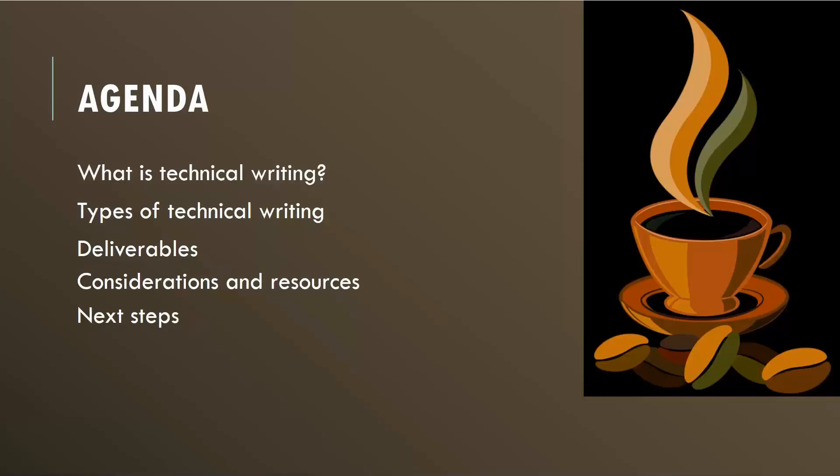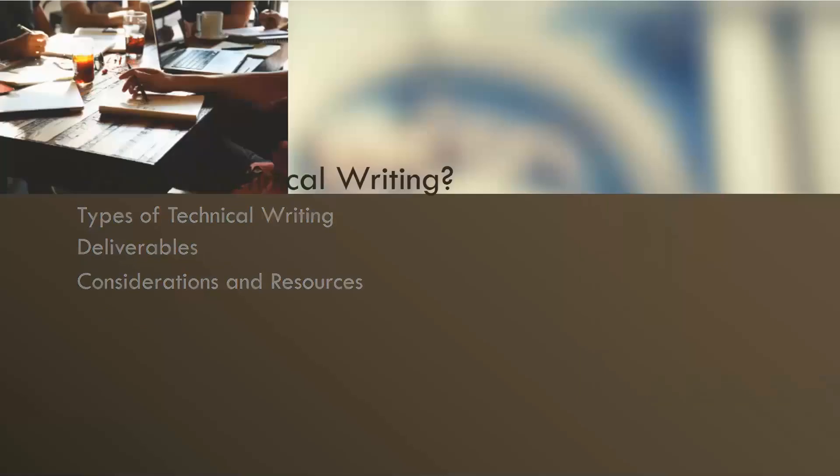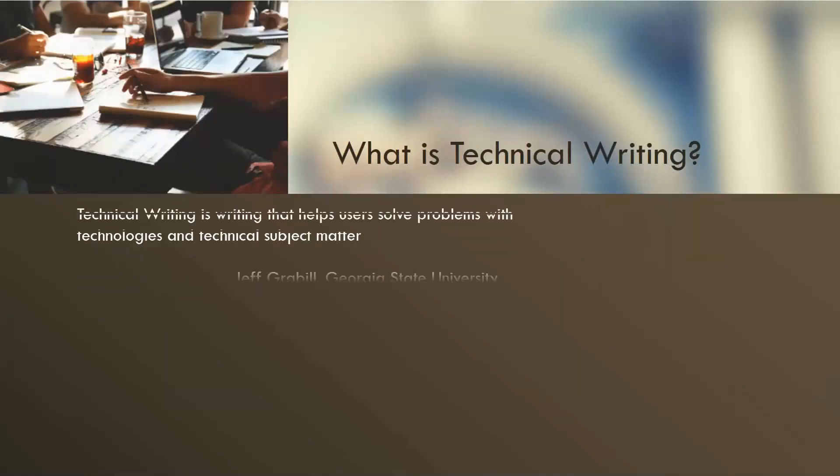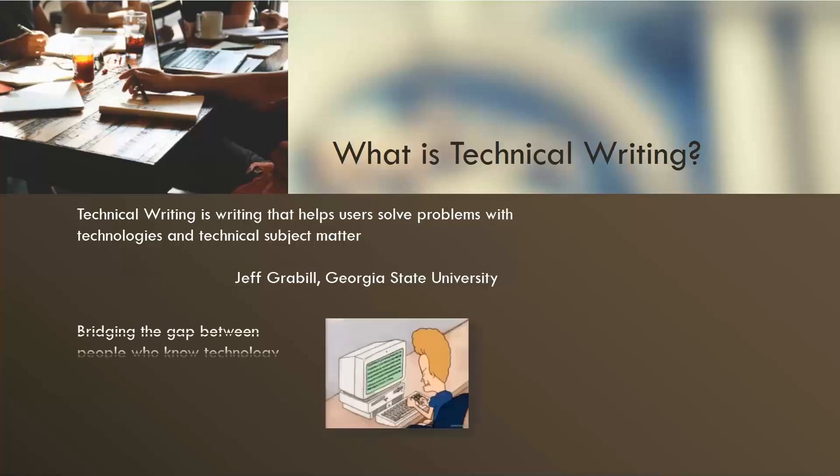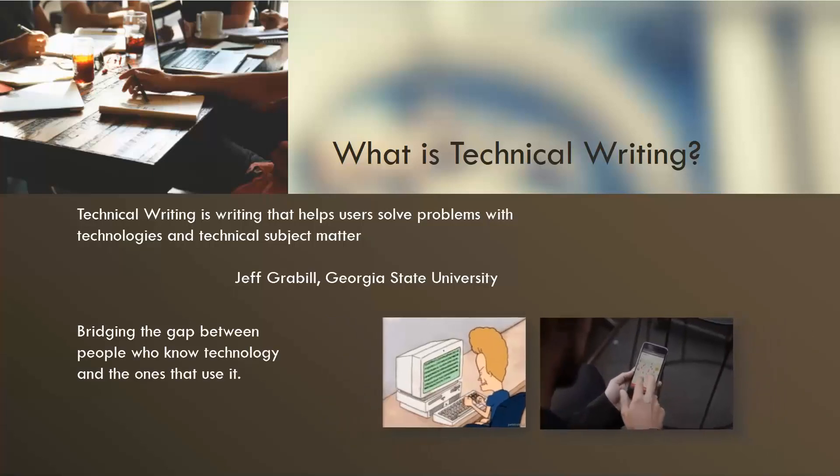So, let's start off with what technical writing means. First, a complex and vague definition: a writing that helps users solve problems with technologies and technical subject matter. I don't think this is the best way to explain what technical writing is. Let's check out another one. Bridging the gap between people who know technology and the ones that use it. So, what does this mean?